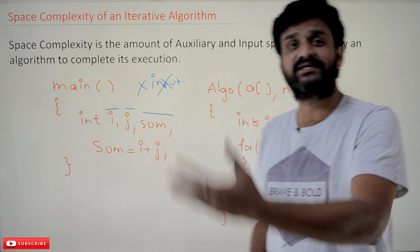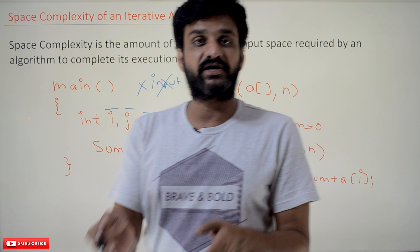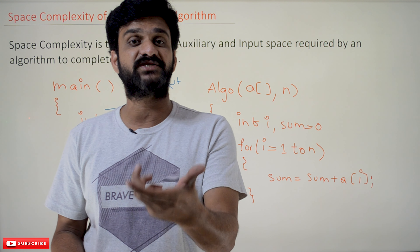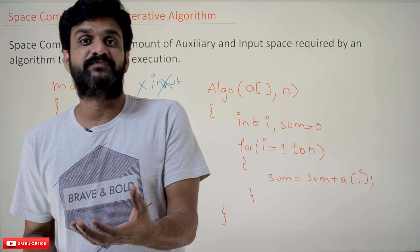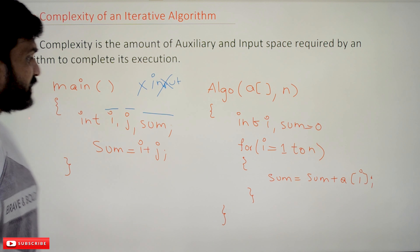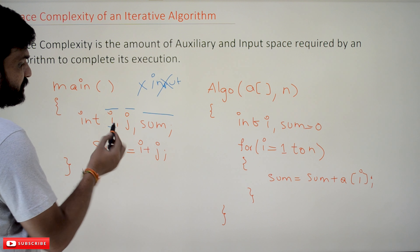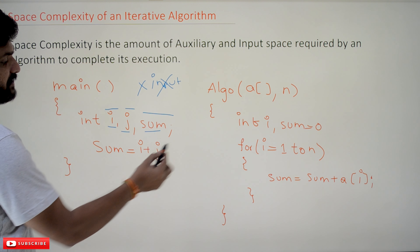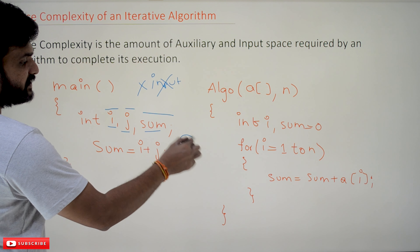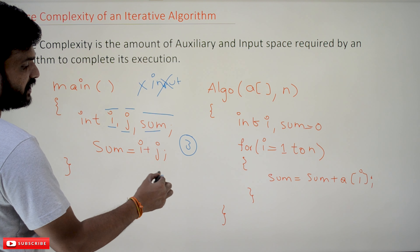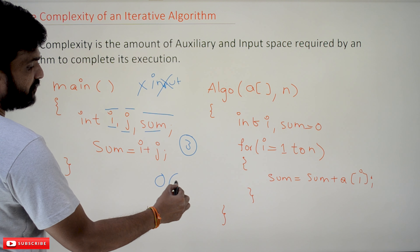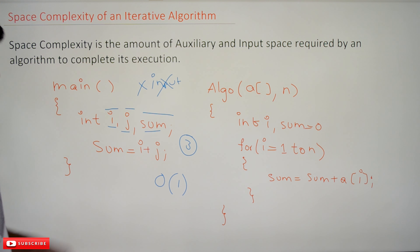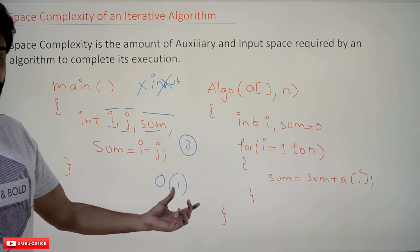We consider each variable to occupy one unit of space. Usually integers occupy four bytes, but let's assume one unit per variable. The space required by the three variables is three units — a constant amount of space. So the overall space complexity of this algorithm is O(1), i.e., order of one.